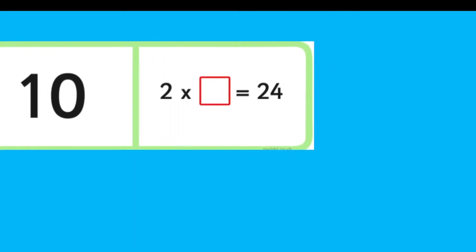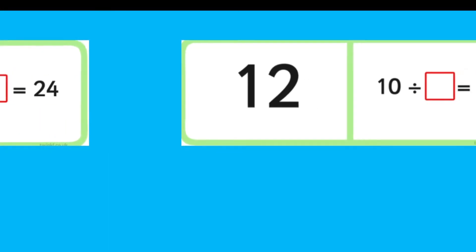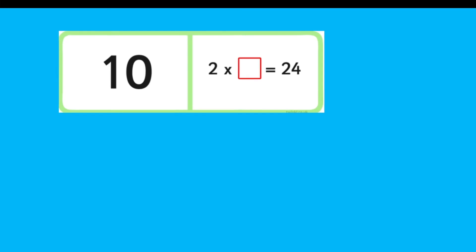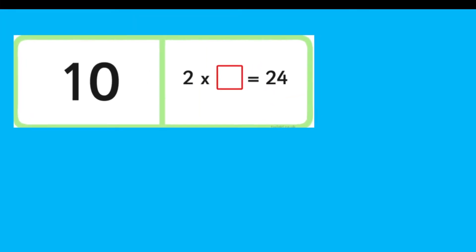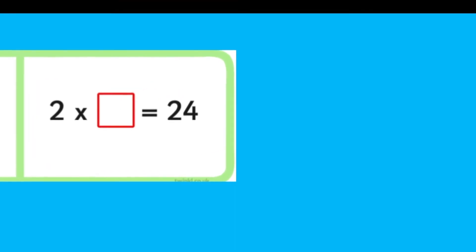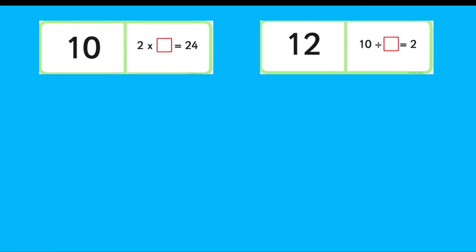Loop cards can be used as a whole class. In this way, each child will probably have one card. For example, here a class could be going over the two, five and ten times tables at the start of year three. First child reads their question two times something equals twenty-four. A child with the correct answer reads their answer. Twelve, then ask their question.